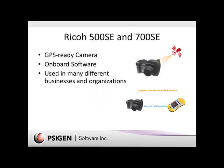The Ricoh 500 and 700 SE cameras are GPS-ready cameras with onboard software that lets you not only automatically identify the location in which you snap the picture, but also enter additional information. There are all types of applications for these cameras, everything from law enforcement to companies that do cell phone tower maintenance to assessor's offices, and the list just goes on and on.